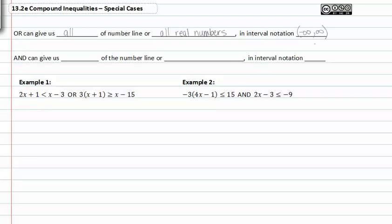Whereas if we look at an AND compound inequality, we could get none of the number line or no solution. And in interval notation, you would just have to write it like that, an empty set, because there's nothing to put there.